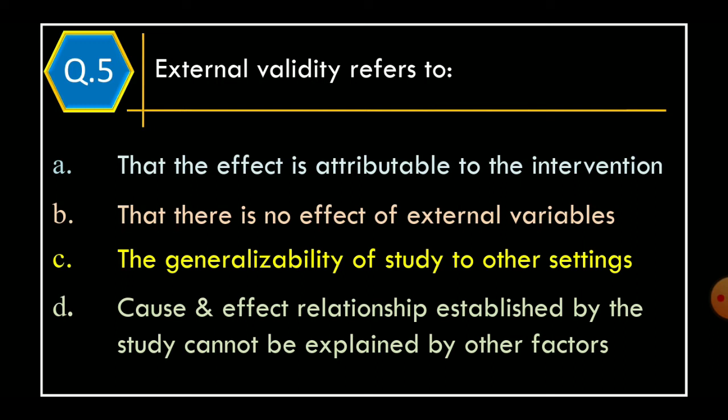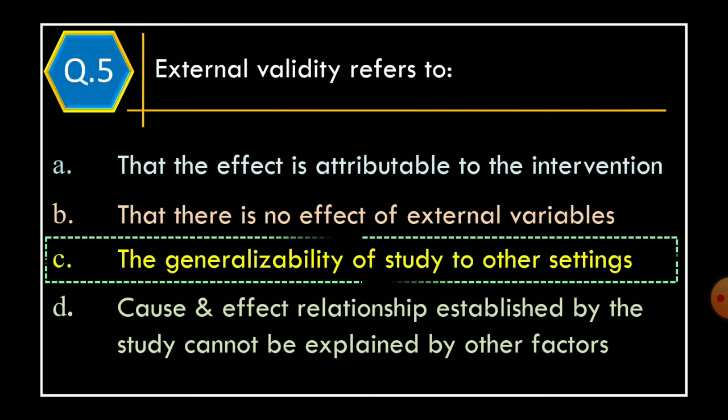Option D: cause and effect relationship established by the study cannot be explained by other factors. And correct option is Option C: the generalizability of study to other settings.